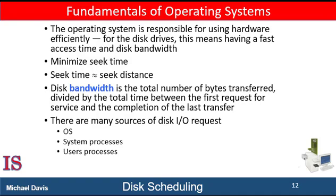The device bandwidth is the total number of bytes transferred divided by the total time between the first request for service and the completion of the last transfer. We can improve both access time and bandwidth by managing the order in which storage I/O requests are serviced. Whenever a process needs an I/O to or from the drive, it issues a system call to the operating system. The request specifies several pieces of information: whether the operation is input or output, the open file handle indicating the file to operate on, the memory address for the transfer, and the amount of data to transfer.